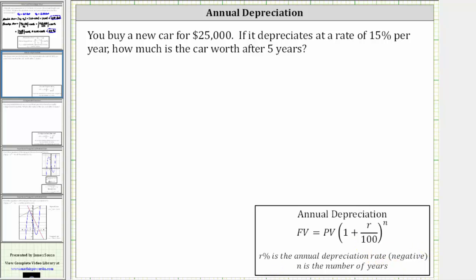N is the number of years. So for the given example, we don't know the future value of the car after five years. The present value is the cost of the new car, which is $25,000. The depreciation rate is 15% per year, and therefore R percent is equal to negative 15%. It's negative because the value is decreasing at a rate of 15% per year, and the number of years is five years.